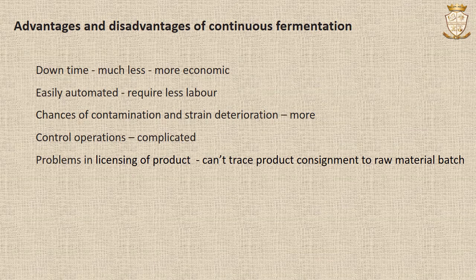Looking at the advantages and disadvantages of continuous fermentation: the downtime of a fermenter is much less, making a continuous system more economical compared to batch fermentation. The continuous fermenter can be more easily automated and thus requires less labor. However, the chances of contamination and loss of productivity due to strain deterioration are higher in continuous fermentation. The control operations are more complicated, and there can be problems in licensing a continuous process product, since it may not always be possible to trace a consignment of product to a batch of raw materials, as several different batches of media will be used in a long continuous process.